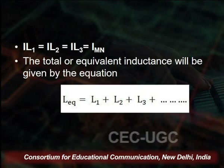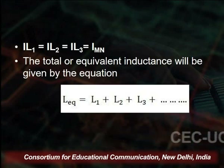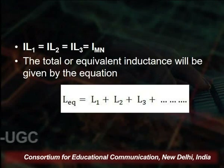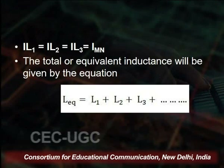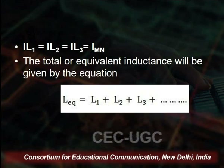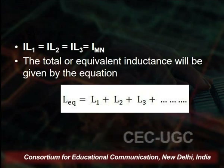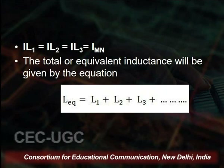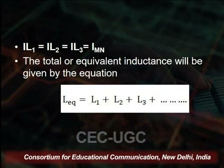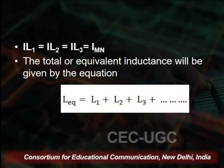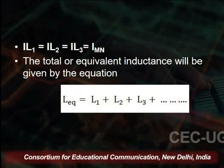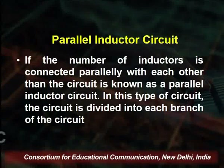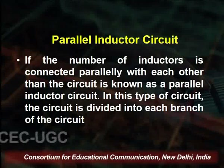The total current will be I_MN from one terminal to the other. The total or equivalent inductance is given by: L_equivalent equals L1 plus L2 plus L3. That is, the total inductance is the sum of all the individual inductors.